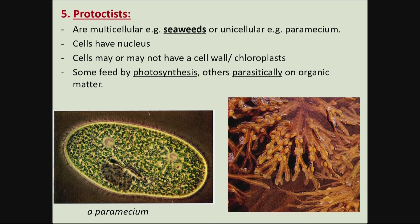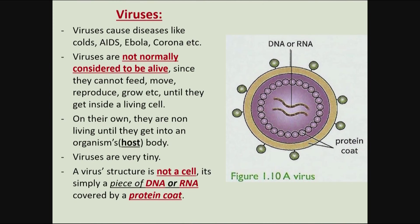The last kingdom is Protoctists. Some are multicellular like seaweed, while others are single-celled like Paramecium. Their cells have a nucleus. The cells may or may not have a cell wall or chloroplasts, and some feed by photosynthesis while others feed parasitically on other organic matter.